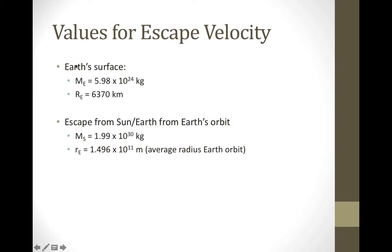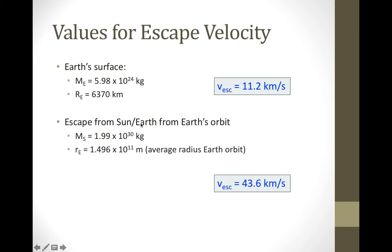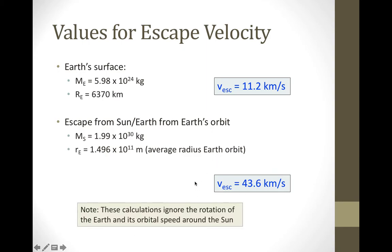We can calculate some values for the escape velocity. Taking the mass to be the mass of the Earth and the initial distance to be the radius of the Earth, we find the escape velocity for the Earth is 11.2 kilometers per second. If instead we want to escape the Sun from the Earth's orbit, we take the mass to be the mass of the Sun and the distance to be the average orbital distance of the Earth, giving a different escape velocity. Note this assumes the object is not moving relative to the Sun at that distance — if you're on the Earth, you'd also have the Earth's orbital speed, making the calculation a bit different.